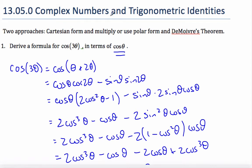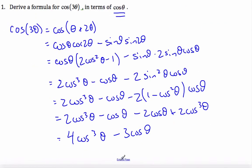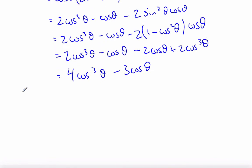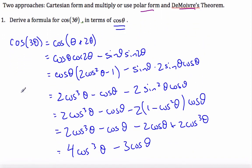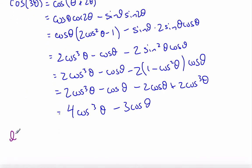There is a second approach that I can use — and there's a hint here — using polar form and De Moivre's Theorem. So let's go ahead and try method number 2. With method number 2, I'm going to start off by letting Z equal cosine theta plus i sine theta, our general complex number.